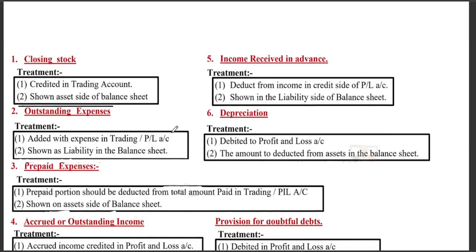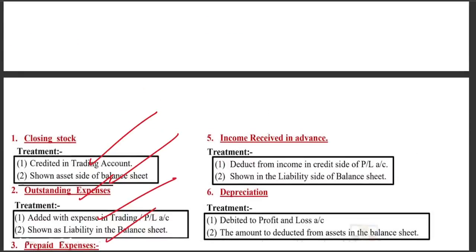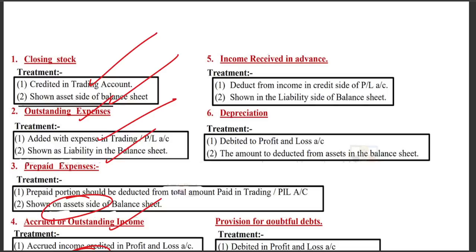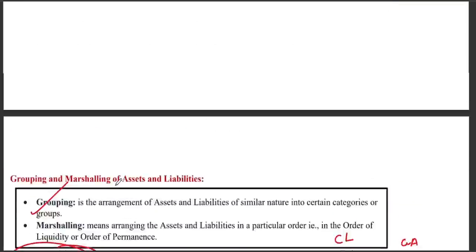In the last chapter, adjustments are important. For closing stock, it is shown as a credit in the trading account and as an asset in the balance sheet. Outstanding expenses are added to the relevant expense account and shown as a liability in the balance sheet. Prepaid expenses are deducted from the expense account and shown as an asset in the balance sheet. Debtors are shown as an asset, and after providing for bad debts, the adjusted debtor balance is shown in the balance sheet. In this video, we covered complete theory questions for accounting.